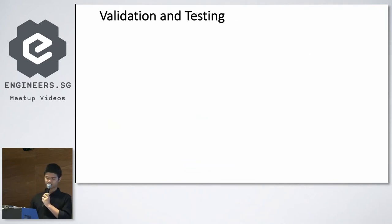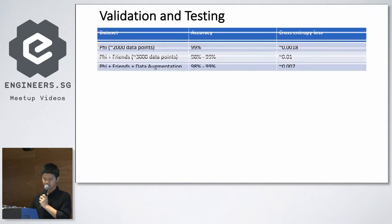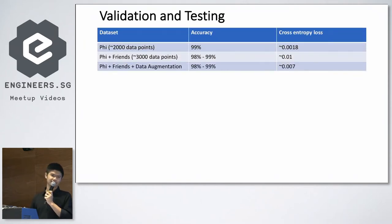I'm showing you the validation and testing results, which are surprisingly good. When I train on my own data from my own eyes, the accuracy is very high and loss is very low - nearly 99%, which is quite ridiculous. Note that this is the validation and testing set, not training accuracy. My data and my friends' data, totaling 3,000 data points, also get quite similar results. I also do data augmentation.